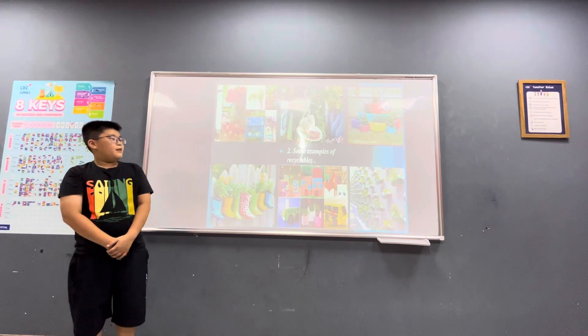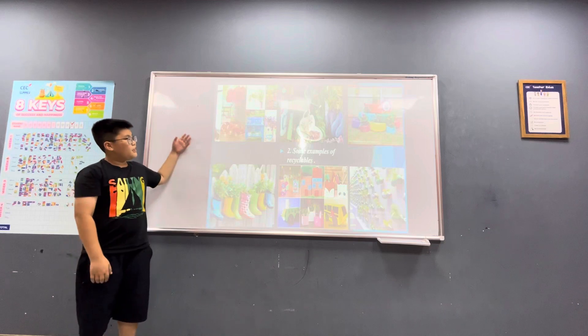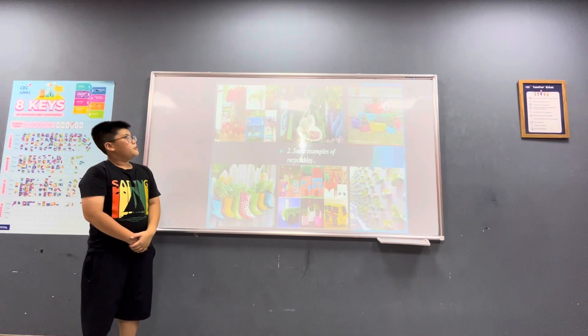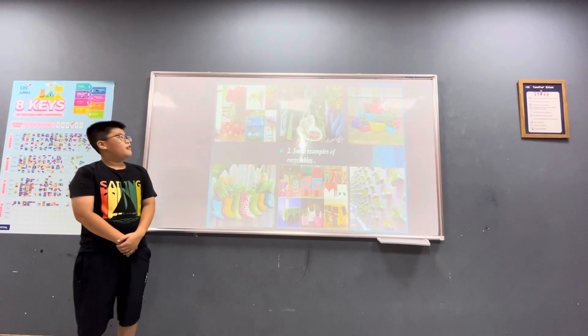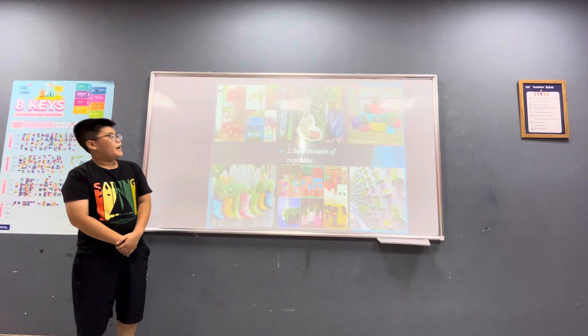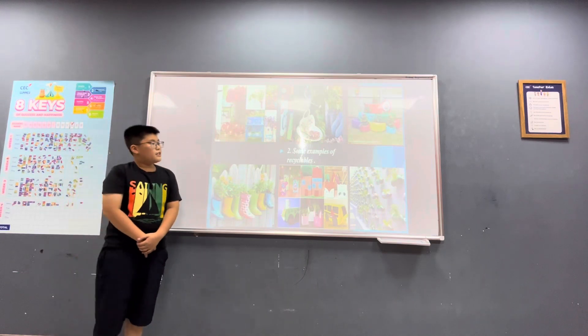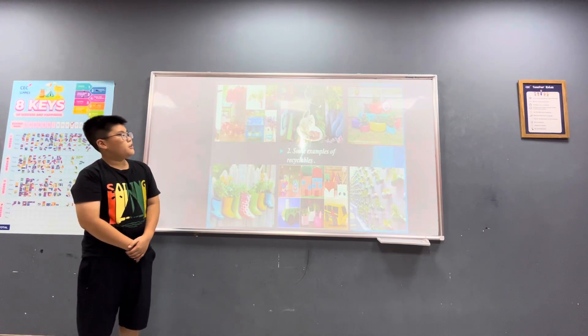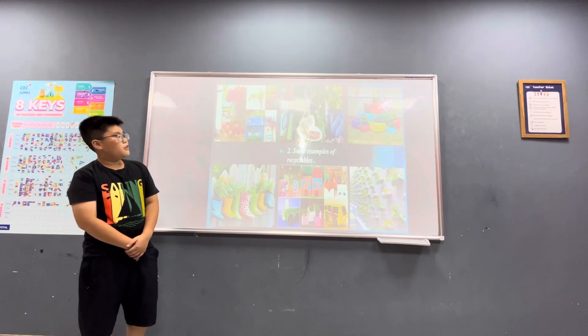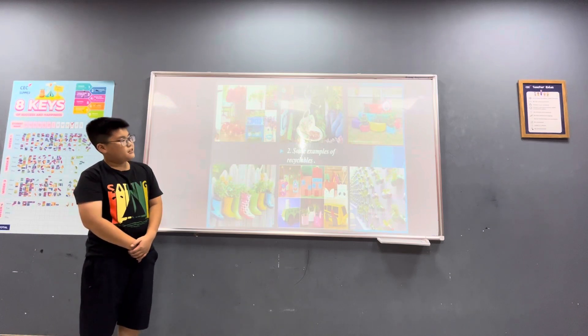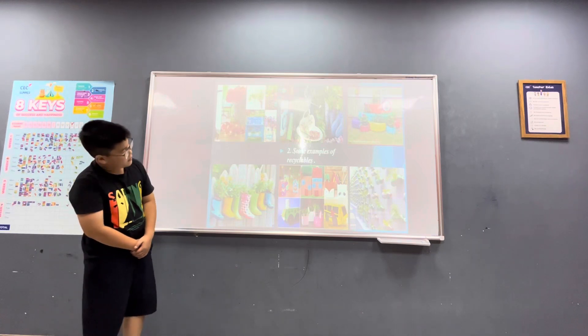There are some examples of recyclable things. Look at the first picture, you can see we use books and plastic bottles to make the things we need. We use metal pans and old things to decorate your garden. The second picture, we use spoons, cups, teacups and plates to decorate your garden.